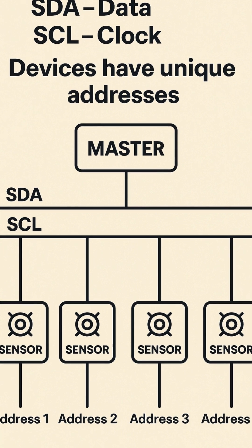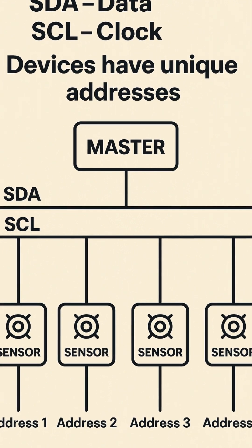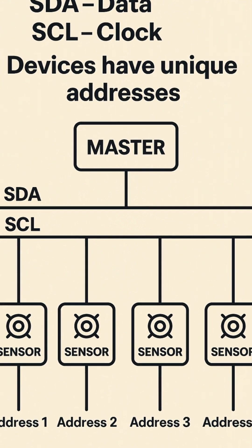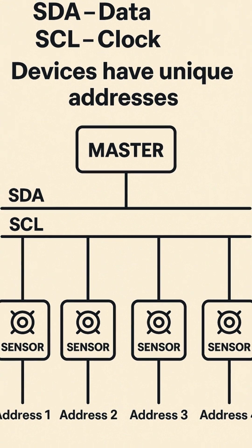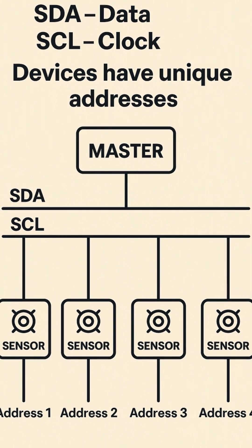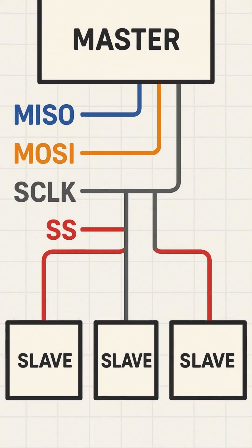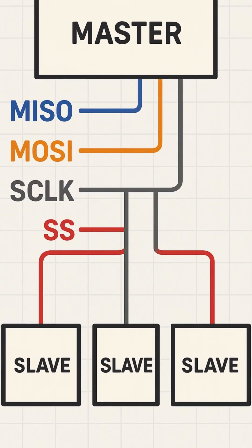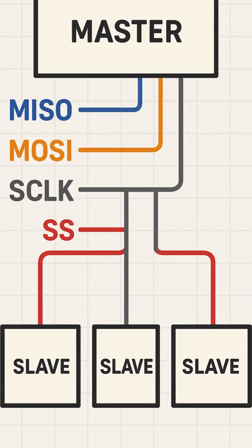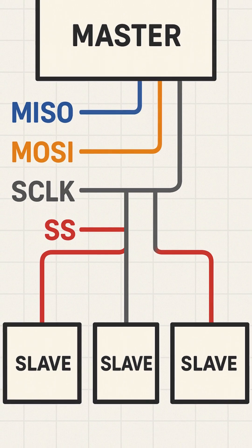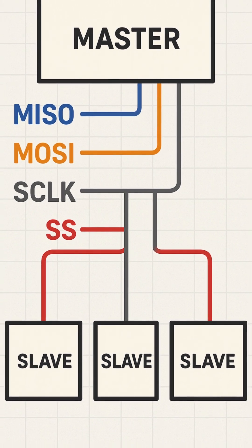Next: I2C, Inter-Integrated Circuit. It's like a shared bus system — just two wires, SDA and SCL, can connect multiple devices, each with its own address. Ideal for sensors, wearables, or smart appliances.